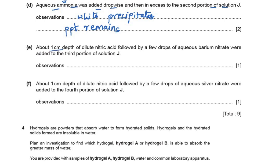About 1 cm depth of dilute nitric acid followed by a few drops of aqueous barium nitrate were added to the third portion of solution J. Barium nitrate tests for the sulfate ion. Our compound contains chloride, not sulfate, so this test should give no results. Write: no change, or no precipitate.